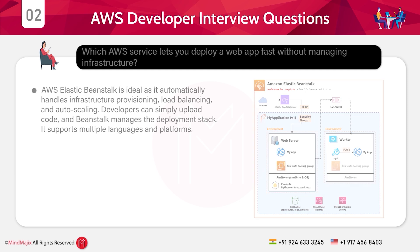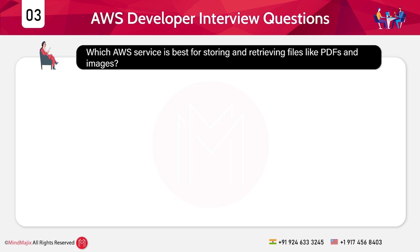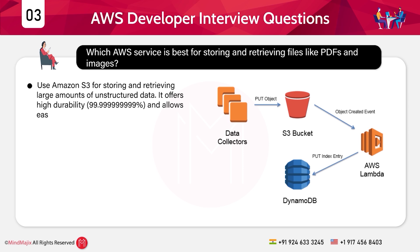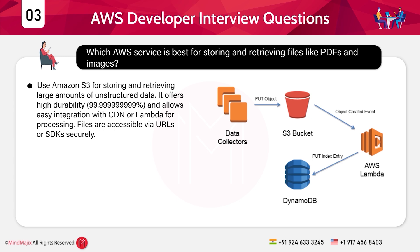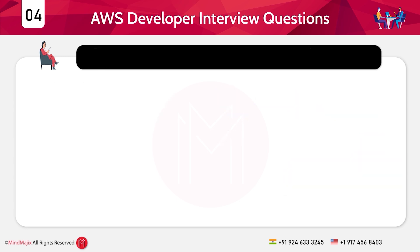Question 3: Which AWS service is best for storing and retrieving files like PDFs and images? Answer: Use Amazon S3 for storing and retrieving large amounts of unstructured data. It offers high durability — 99.99% — and allows easy integration with CDN or Lambda for processing. Files are accessible via URLs or SDKs securely.